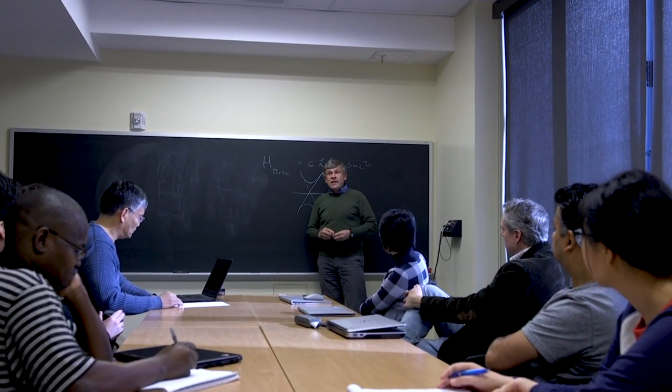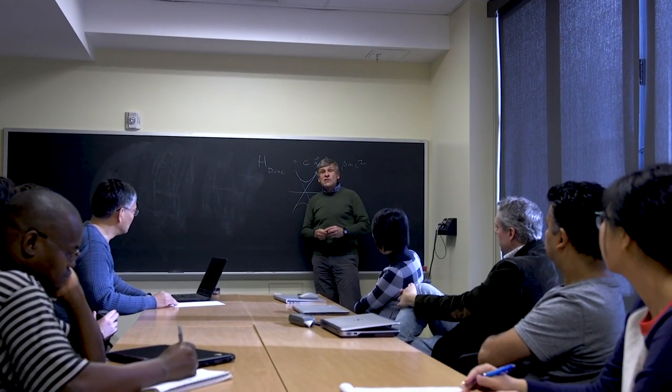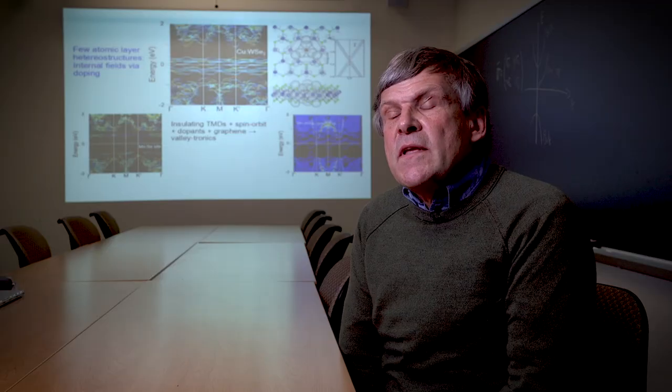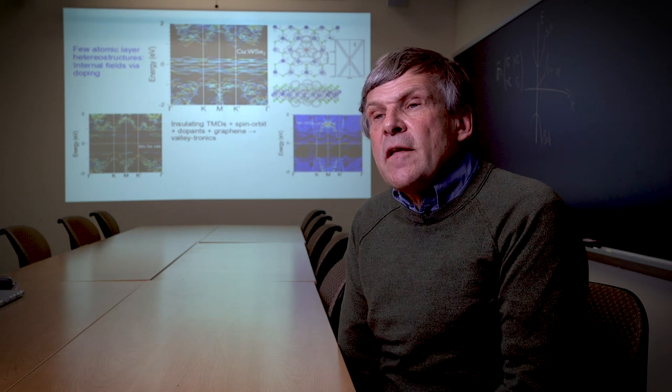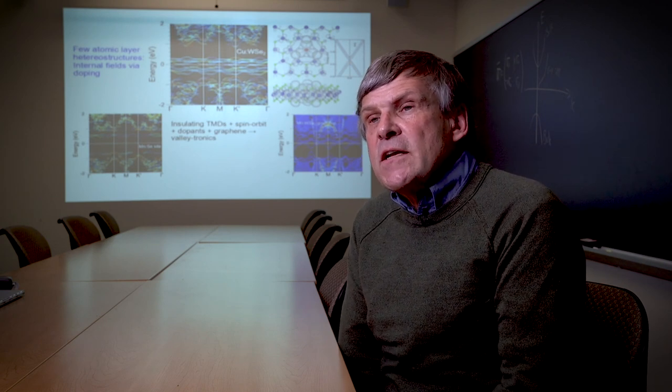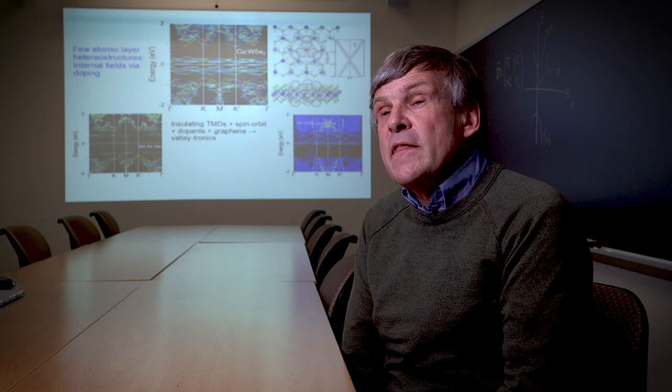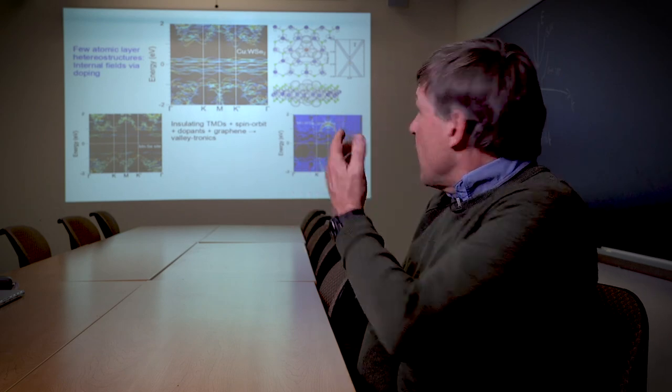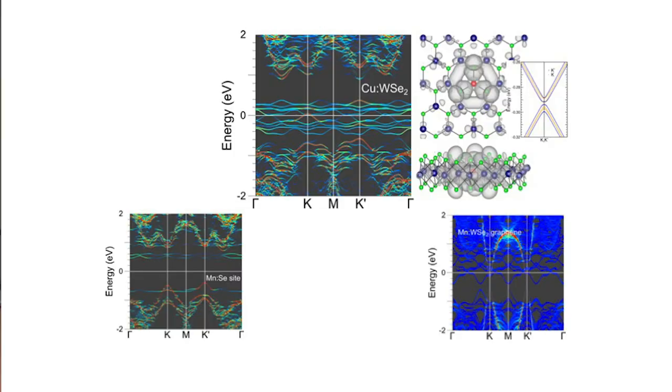What we're trying to do is break the time reversal symmetry by using magnetic fields or internal doping. One of the systems we've been looking at is transition metal dichalcogenides doped with non-magnetic systems such as copper, shown over there, which induces a magnetic field and breaks the valley symmetry.